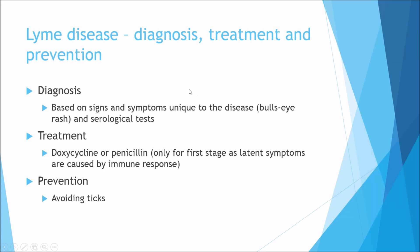For diagnosis, it is based on the signs and symptoms unique to the disease — the bullseye rash is almost certain confirmation of Lyme disease. For treatment, we can use two types of antibiotics: doxycycline or penicillin. However, these only work for the first stages, as latent symptoms such as heart failure and arthritis are caused by the overwhelming immune response, not the bacteria itself. The most obvious way to prevent it is to avoid ticks, and you can use insecticides to kill them.